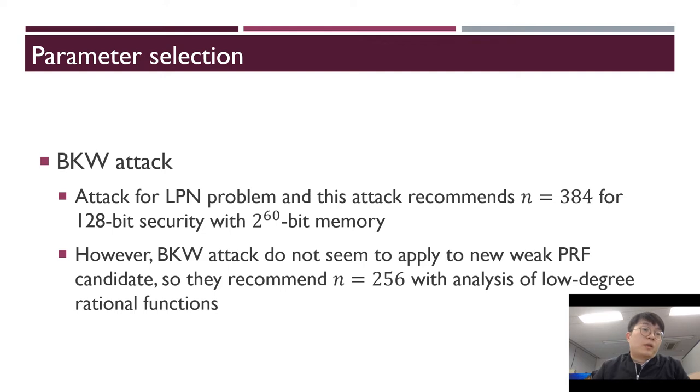The parameter selection is based on the BKW attack. BKW attack is an attack for the LPN problem. This attack recommends n is 384 for 128-bit security with 2^60-bit memory. However, BKW attack does not seem to apply to the new weak PRF candidate. So they recommend n is 256 with analysis of low-degree rational functions.